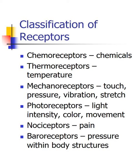Within our sensory system, we have different receptors that respond best to certain stimuli. The first type are chemoreceptors, which detect changes within chemicals such as within our food, drink, body fluids, and inhaled air. We find chemoreceptors within our gustatory system as well as our olfactory system. Thermoreceptors respond to differences in temperature, whether hot or cold, and are found within our skin as well as internally within the body.